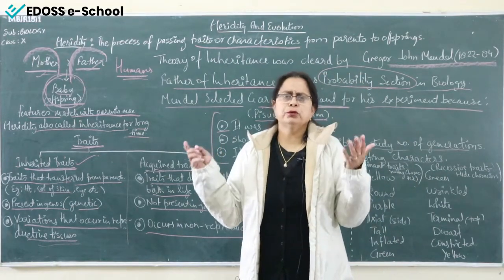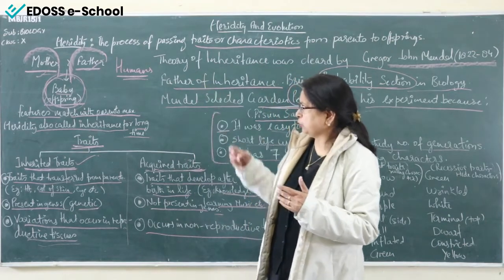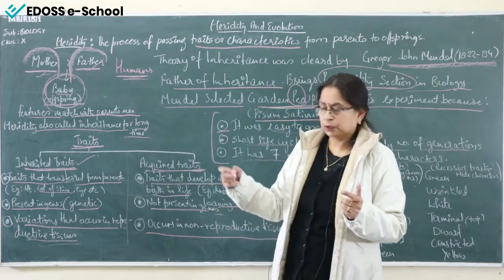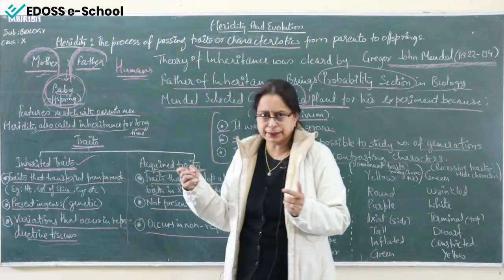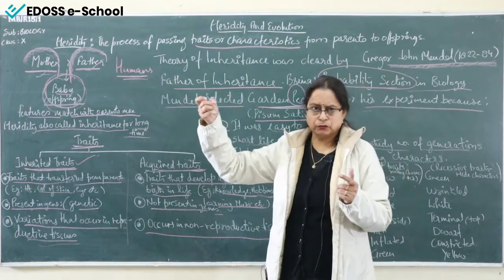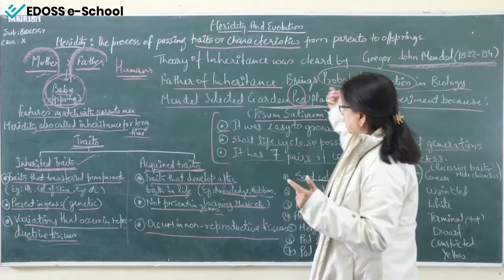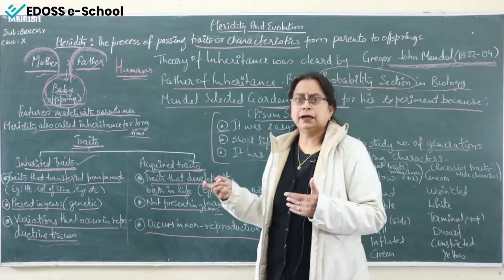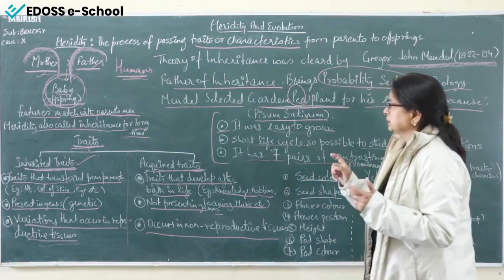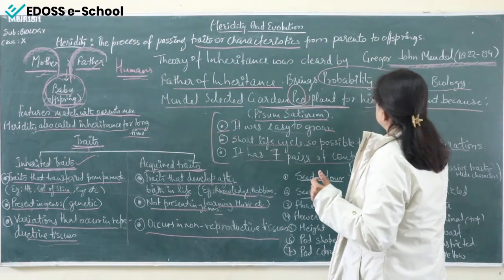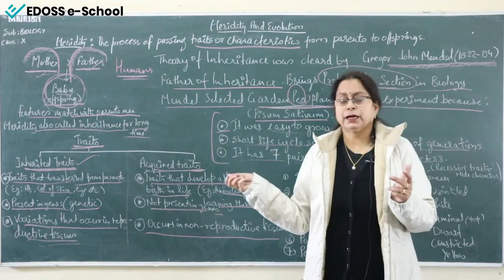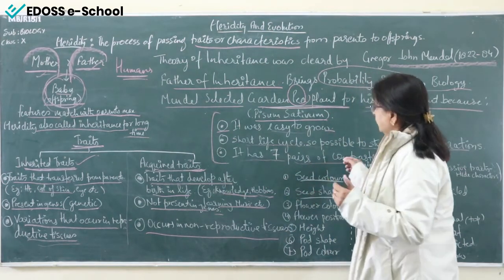Several important questions from this section: What is heredity? How many types of traits are there? Write the difference between inherited and acquired traits. Who is known as the father of inheritance or father of genetics — Gregor John Mendel. Why did Mendel choose the garden pea plant for his experiment? What is the scientific name of the garden pea plant — Pisum sativum?